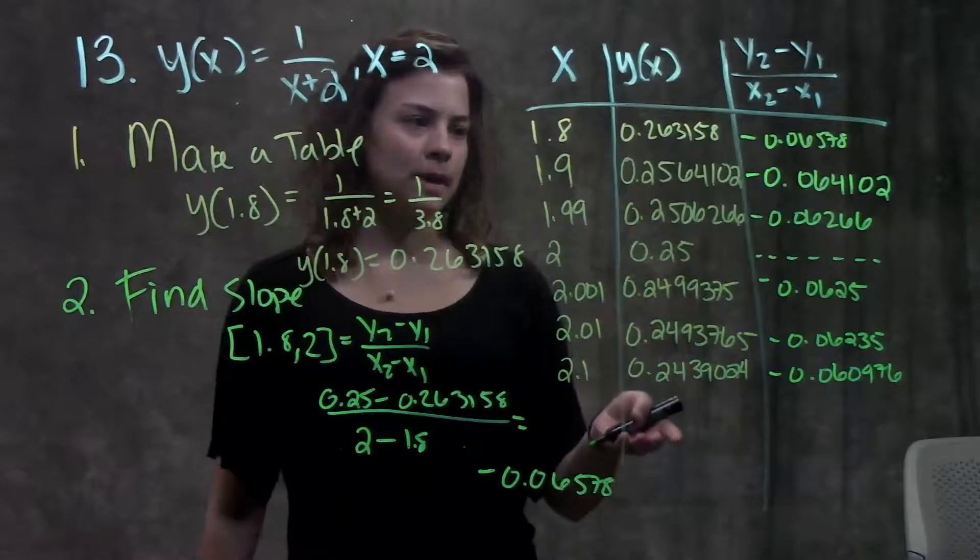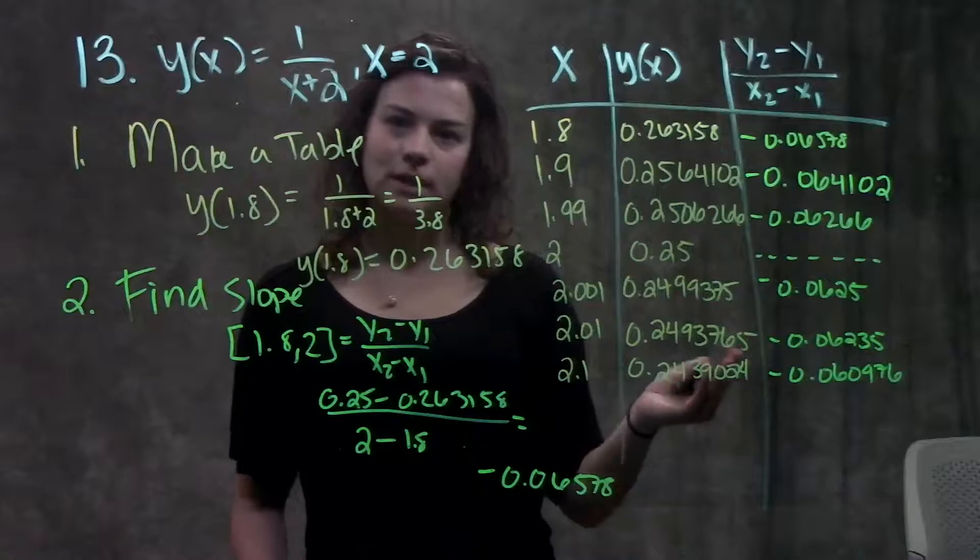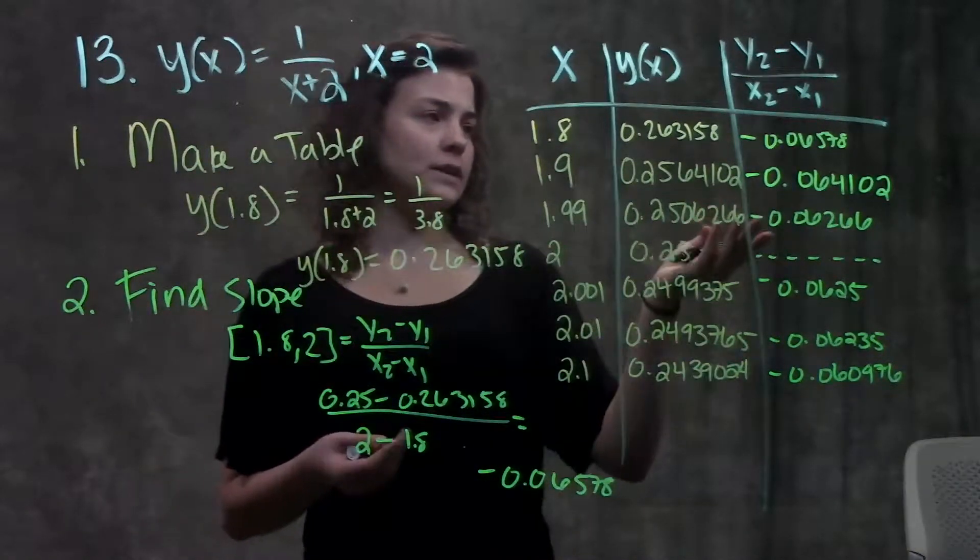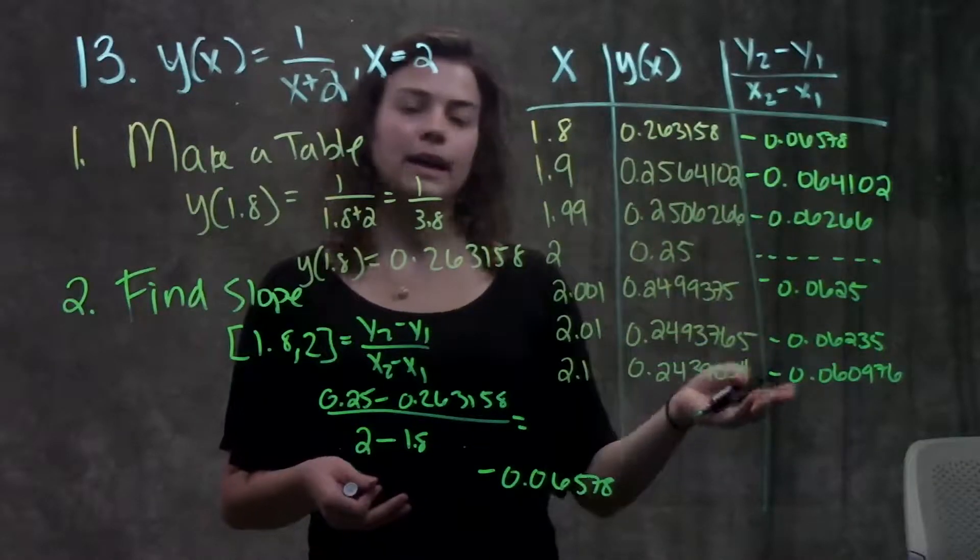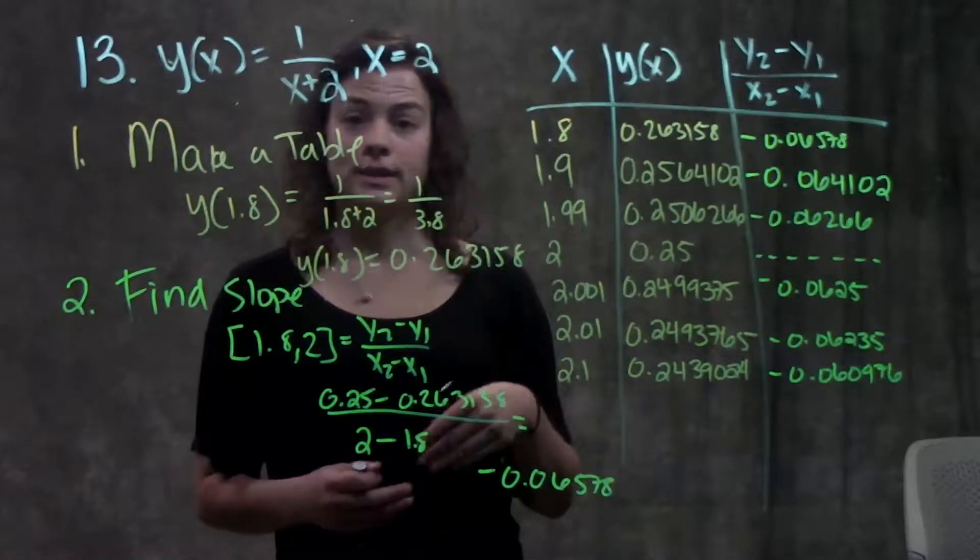Now once I've done that, I've completed my table, found all my slopes. Now I just look at the slopes and see where they're approaching. And if you're to look at all these numbers, you see that both from the left hand side and the right hand side, the slopes are approaching about negative 0.062.